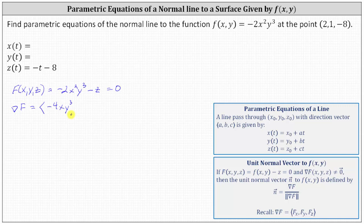The y-component is the partial of F with respect to y, so we differentiate with respect to y treating x and z as constants. We multiply by negative three to get -6; x² is a constant. Subtracting one from the exponent on y gives y², and the derivative of z with respect to y is zero.